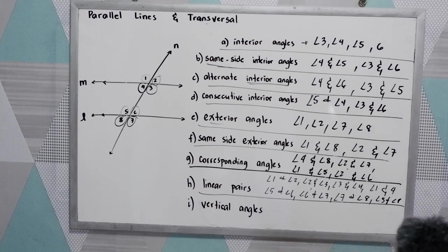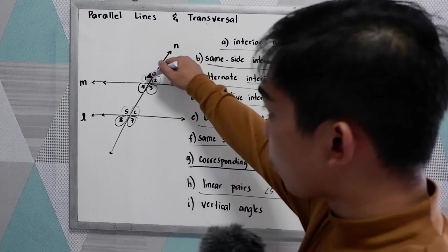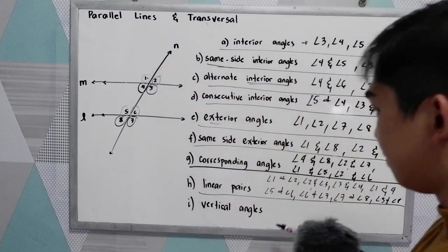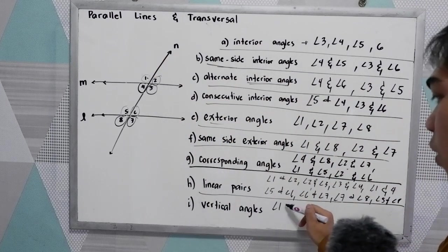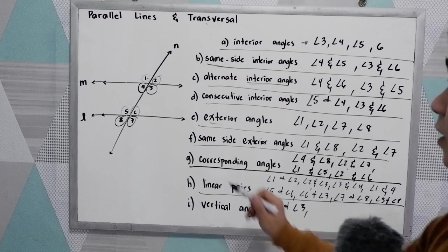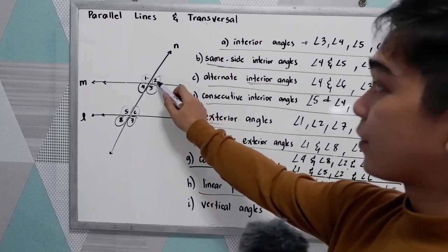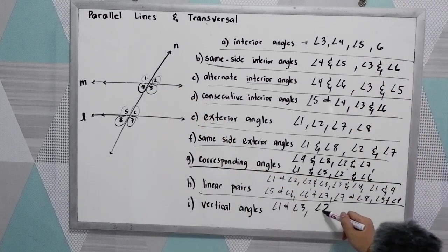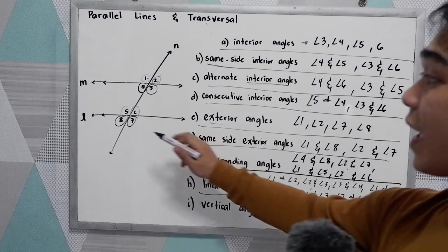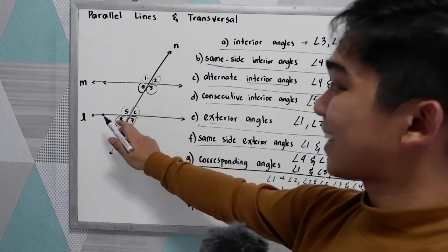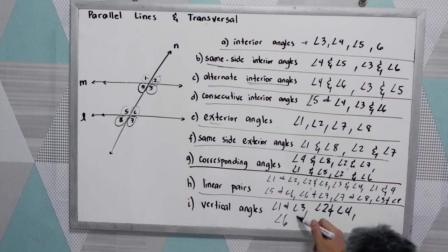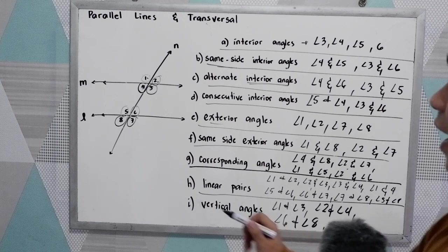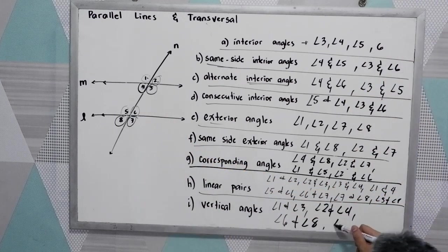And now we have the vertical angles. Vertical angles: we have angle 1 and angle 3, angle 2 and angle 4, angle 6 and angle 8, and angle 5 and angle 7.